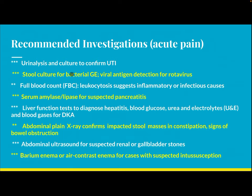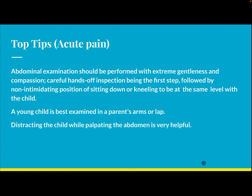Recommended investigations in acute abdominal pain: urine analysis and culture to confirm UTI; stool culture for bacterial gastroenteritis; viral antigen detection for rotavirus; full blood count — leukocytosis suggests inflammatory or infectious cause; serum amylase and lipase for suspected pancreatitis; liver function tests for hepatitis; blood glucose, urea, electrolytes, and blood gas for DKA; abdominal plain X-ray for impacted stool or bowel obstruction; abdominal ultrasound for renal or gallbladder stones; barium or air contrast enema for suspected intussusception.